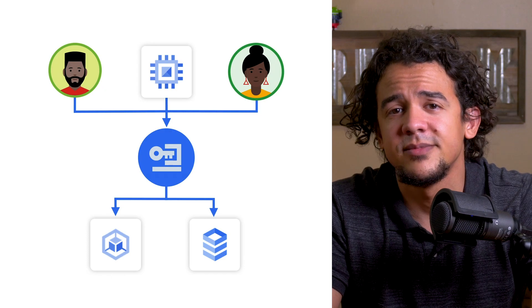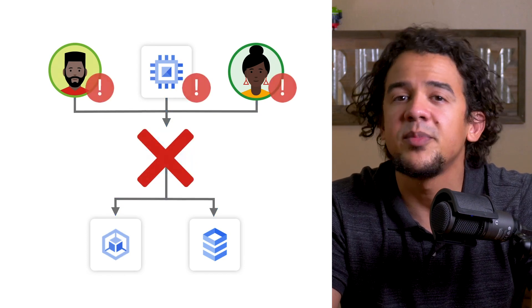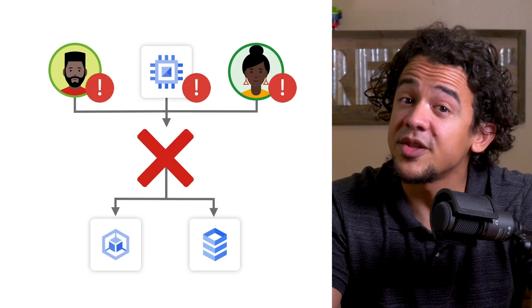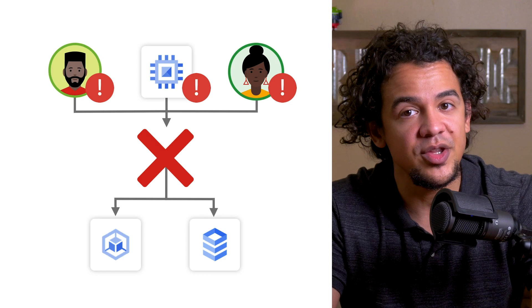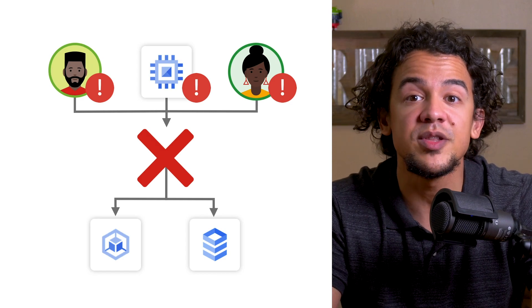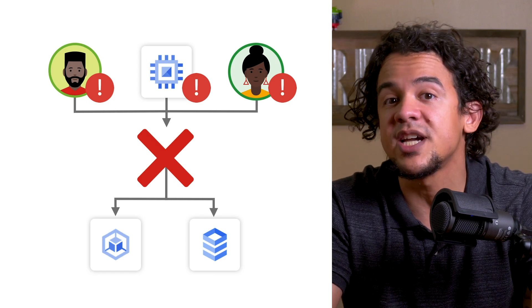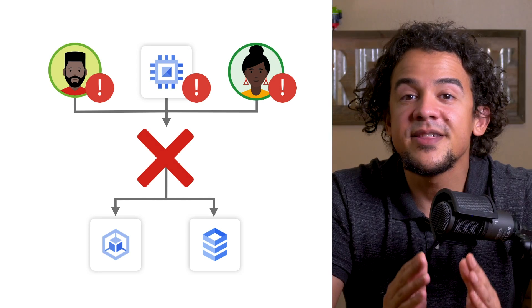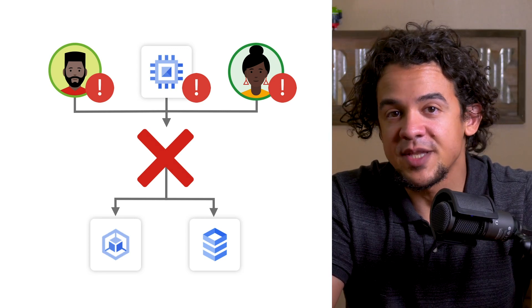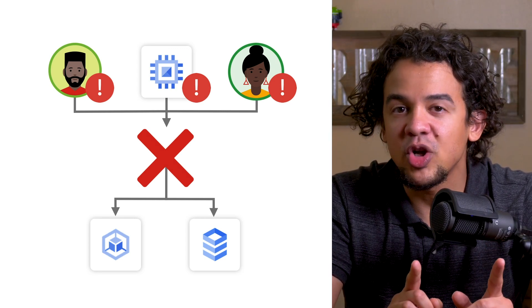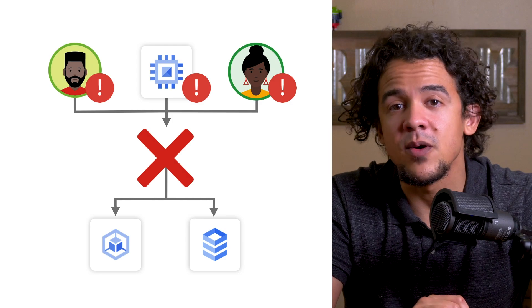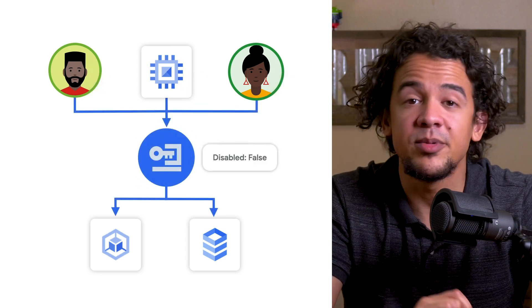All of this role and policy info is available from the Cloud Console under IAM and Admin settings. There may come a day when you'll want to get rid of a service account. You could just delete it, but beware — once you do, any users, applications, or VMs configured to use it to access any resources will lose that access. It is important to use caution when deleting a service account, especially if you're not sure what it's used for. It's much safer to disable it first.